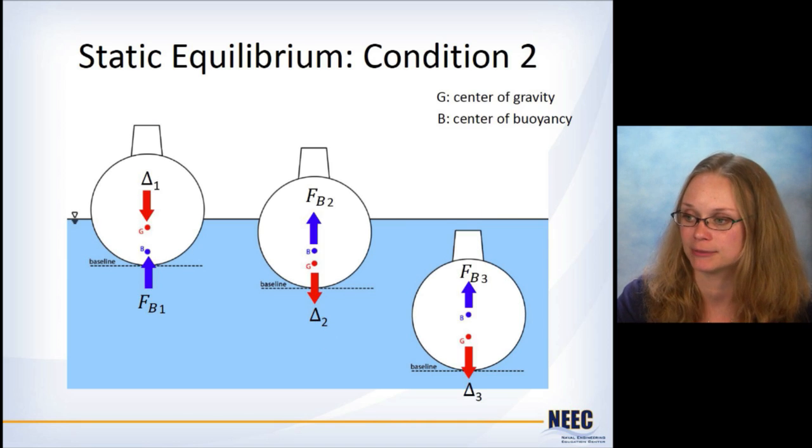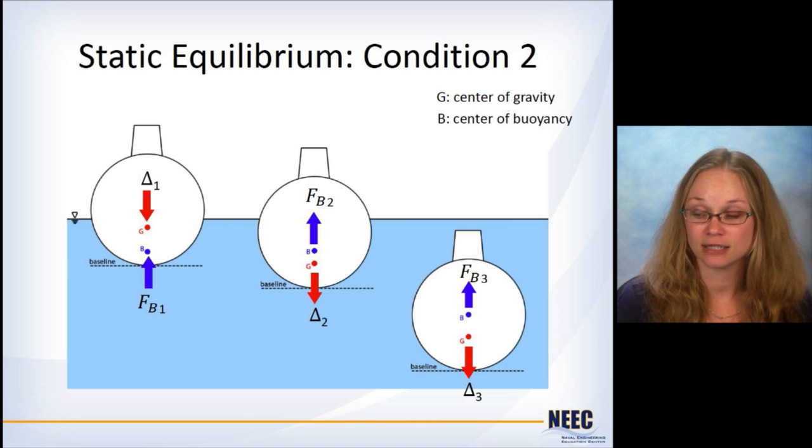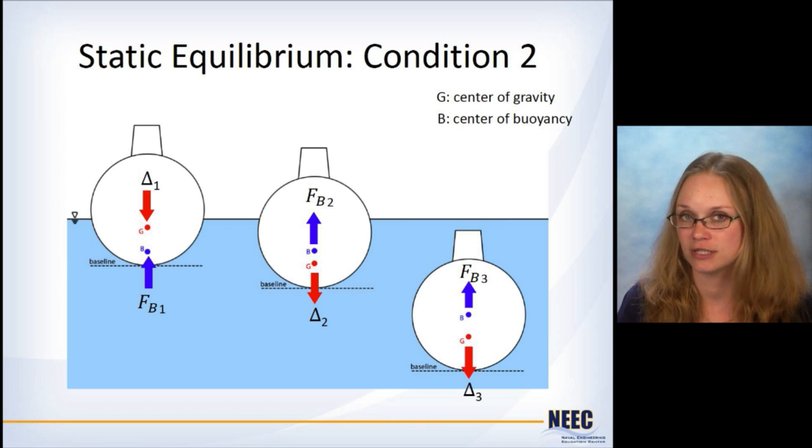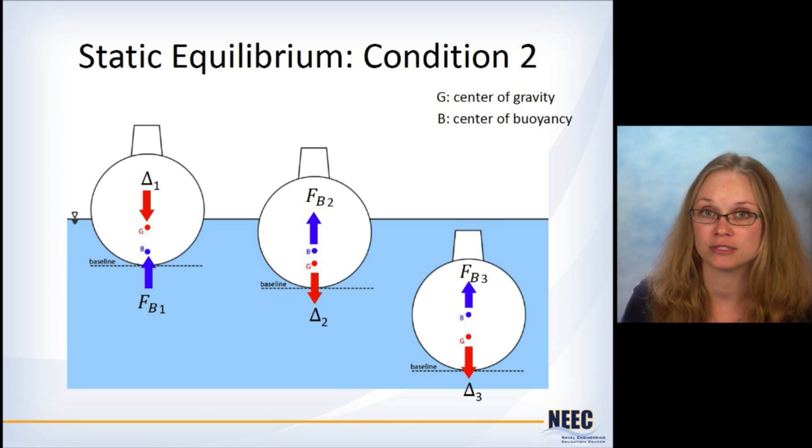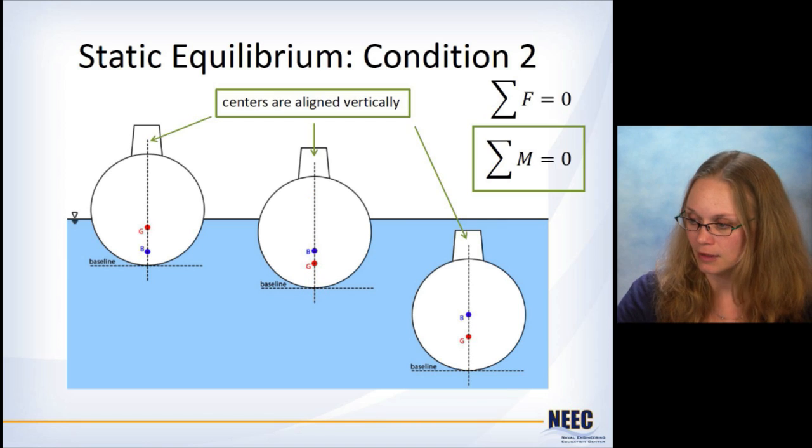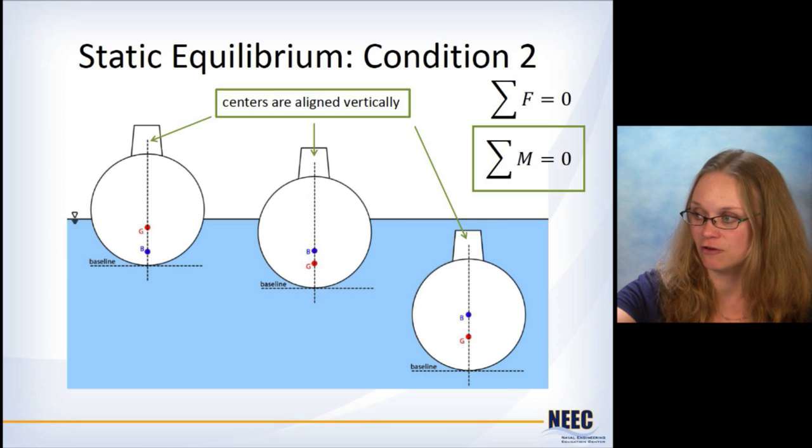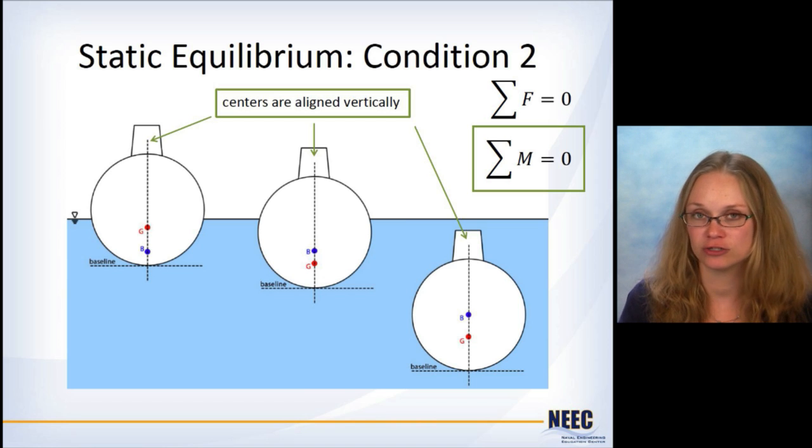So condition one is met. For condition two now, this is when we bring in the center of gravity and the center of buoyancy. The weight acts down through the center of gravity, and buoyant force acts up through the center of buoyancy. If condition two is met, then the centers are aligned vertically, and there is no moment.